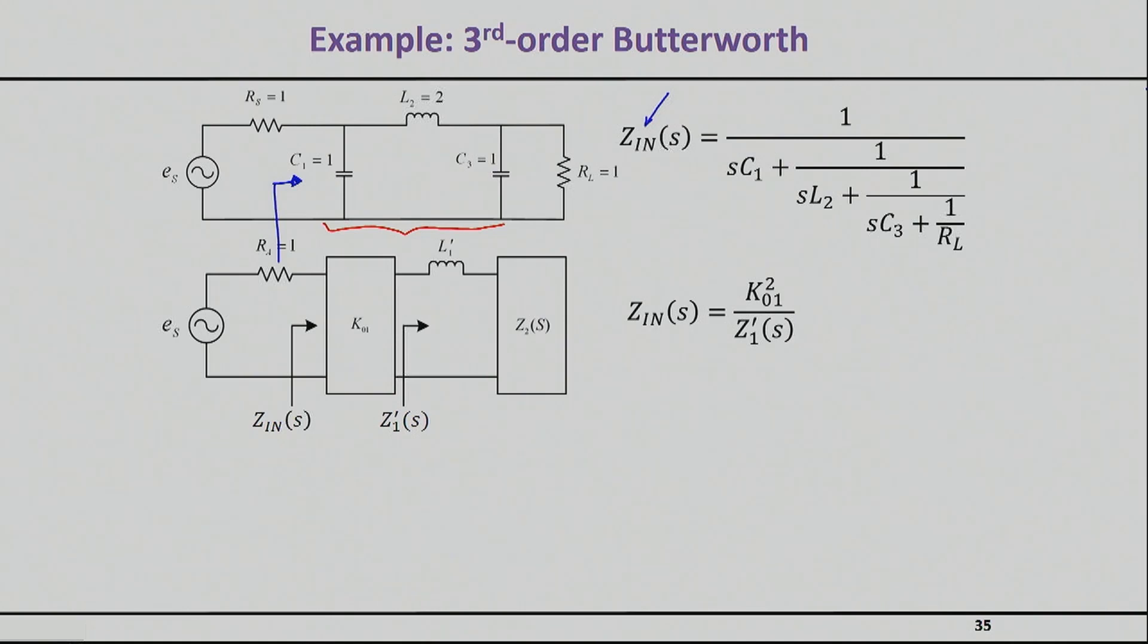Here I'm going to do the example where I want to get rid of these shunt components. It really makes no difference. We will actually later on see cases where we keep the shunt components and retain the series ones. But for the sake of the example, let's say that I don't want to see any shunt components and all my implementations must have only series ones.